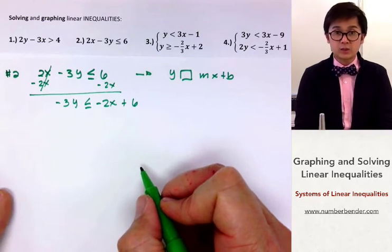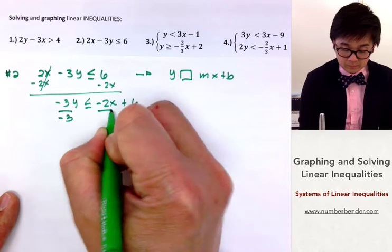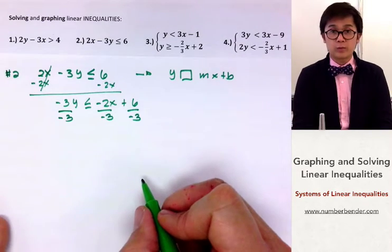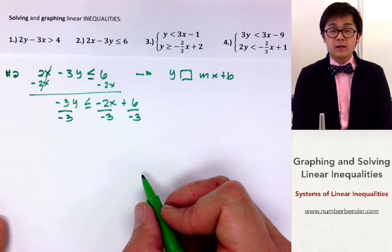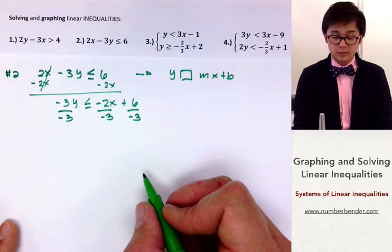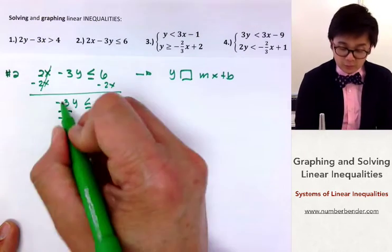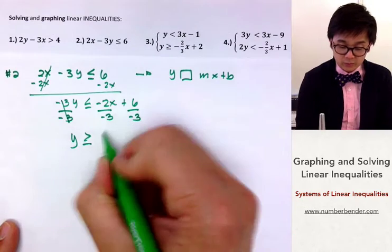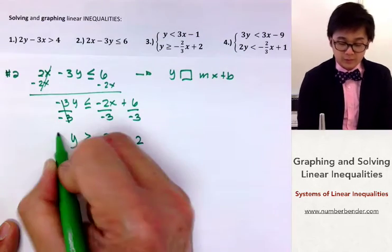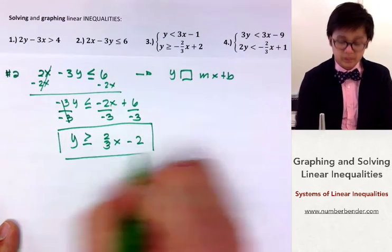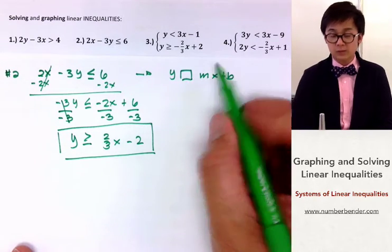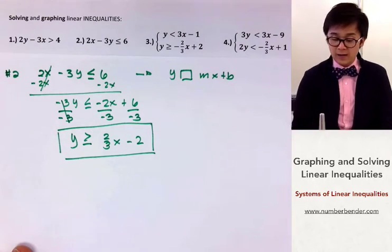Then we divide each term by negative 3. Remember: whenever we divide or multiply by a negative in an inequality, we switch or flip the inequality symbol. So this turns into y greater than or equal to positive 2 over 3x minus 2. This is now our solution, in y greater than or equal to mx plus b form, and we can now graph our inequality.